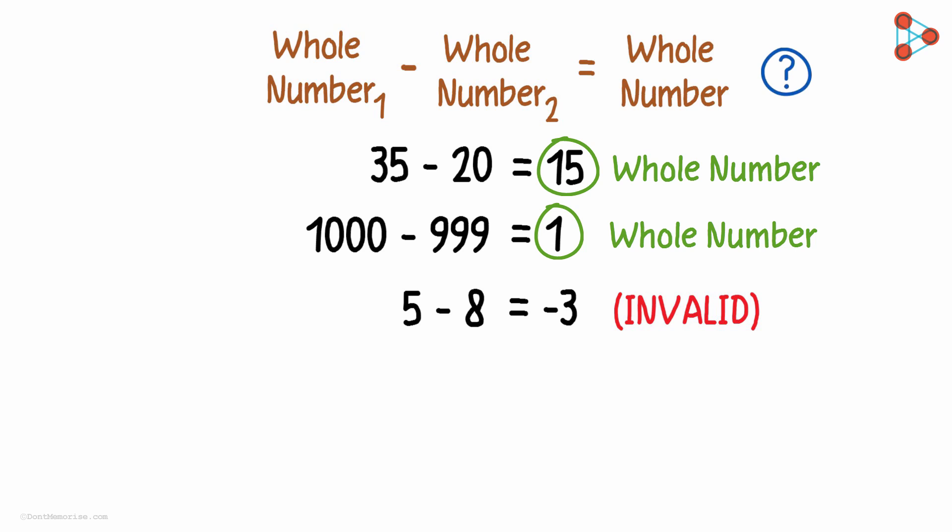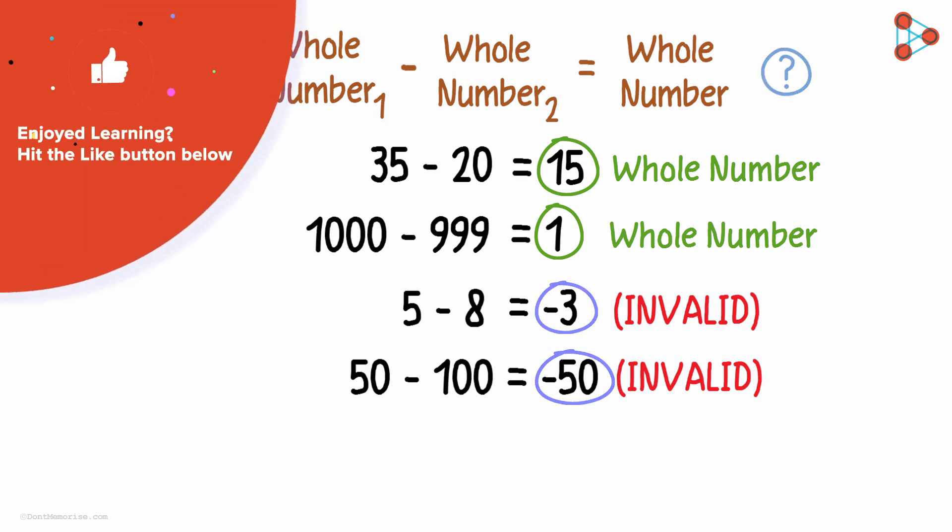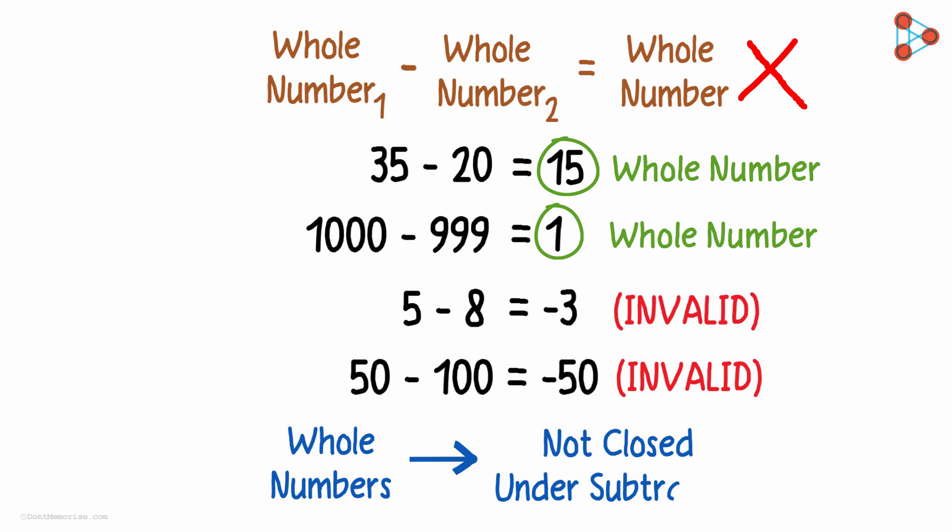Similarly, if you subtract 100 from 50, the answer that you will get is a negative number. Both numbers are not whole numbers. So we can say whole numbers are not closed under subtraction.